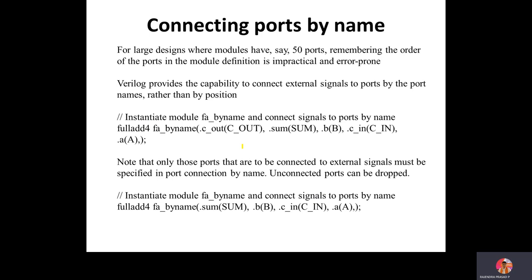The second method is connecting ports by name. You can have ports like carry_in, carry_out, sum, A, B and identify them by their names. Using dot notation: .c_out(co), .sum(sum), .b(b), .c_in(cin), .a(a). This allows you to connect ports explicitly by name regardless of order.